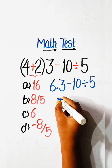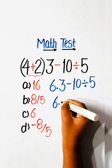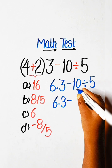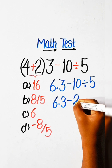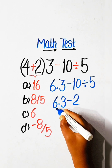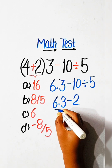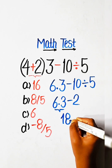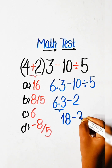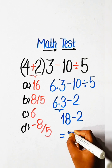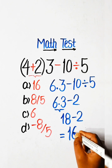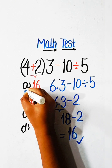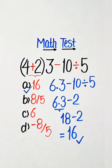So we can write 6 multiplied by 3, minus 10 divided by 5, which is 2. Then 6 multiplied by 3 is 18, minus 2 equals 16. So 16 is our correct answer — Option A is correct.